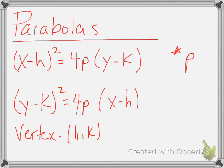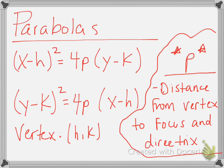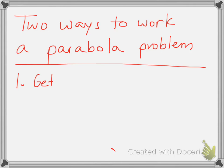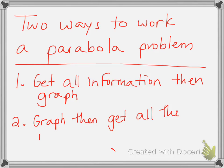The next thing you need to find is p. The important thing about p is that it represents a distance — specifically, p is the distance from the vertex to your focus and your directrix. There are two ways to work these problems: you can find all the information and then graph it, or you can graph it first and then get all the information based on your graph. Either way, you should come up with the same answers.